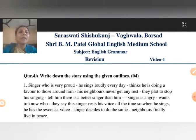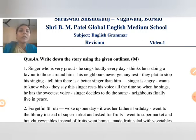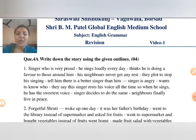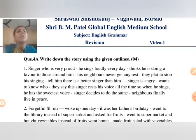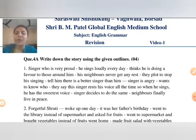So you have the points and from these points you have to make the story. You can start: Once upon a time there is one village. In that village one boy named Rahul is a singer who is very proud because he thinks he is a very good singer and every day he sings loudly. He thinks that he is doing a favor to those around him.